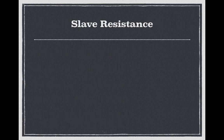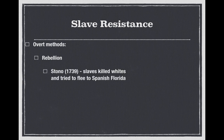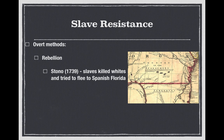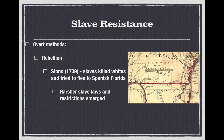Jumping over to slave resistance — there are a couple of different methods to be familiar with. The first are overt methods, such as rebellion. These were less common than covert methods. An example of rebellion is the Stono Rebellion from 1739 in South Carolina, where slaves killed whites in an uprising and tried to flee to Spanish Florida. If they reached Spanish Florida, they would be free.